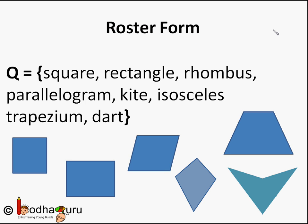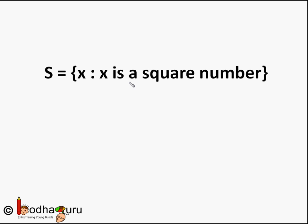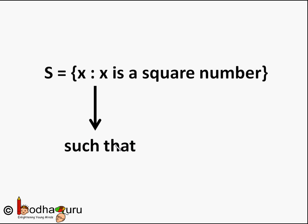But what if there are too many elements in a set? Like a set of square numbers — this will include 1, 4, 9, 16, 25 and so on. It is impossible to write down all square numbers. So we can write the set by defining its elements with a common property like this: set S equals curly brace X colon X is a square number. It means S is a set of elements X such that X is a square number. We can say this set is in set builder form.